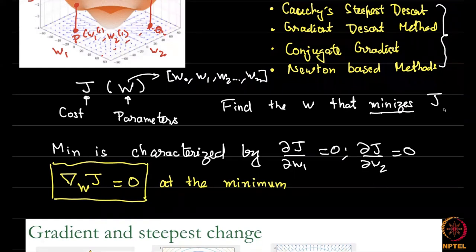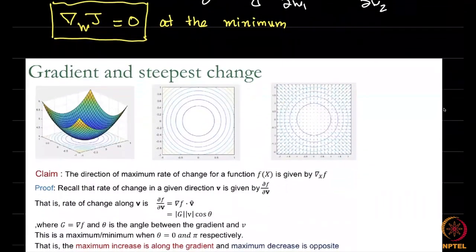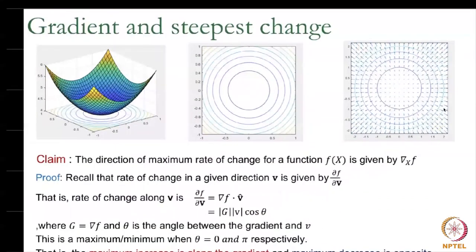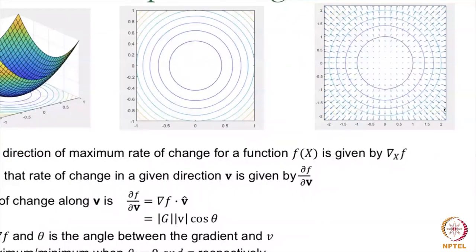We are going to use another intuition which we also discussed in the previous video. You might remember from your college days that if you are given any function f of x, the direction of the maximum rate of change is given by the direction of the gradient. This is a claim — let me explain it first and then provide a quick proof.